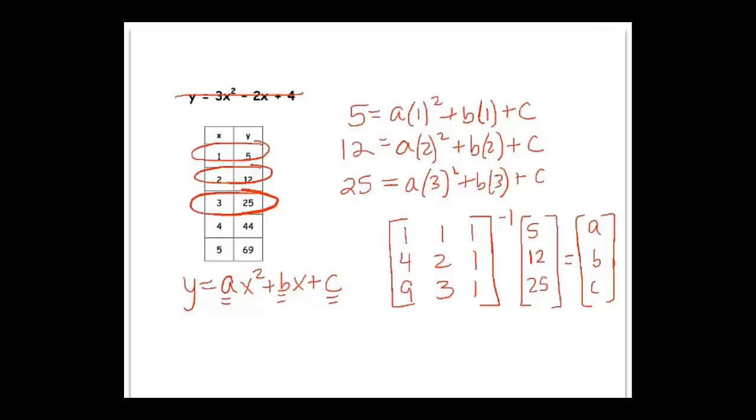Okay. So hopefully you got that the answer in your calculator becomes the matrix 3, negative 2, and 4. Meaning that the function that describes this table would be 3x squared minus 2x plus 4. Which is exactly what we started with in the first place.